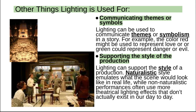Lighting is also used to communicate themes or symbols in a story. For example, the color red might be used to represent love, or green could represent danger or evil. If you look at the first photo, they have an intricate design on the floor using lighting. Think about what themes or symbols could be communicated through that type of lighting.